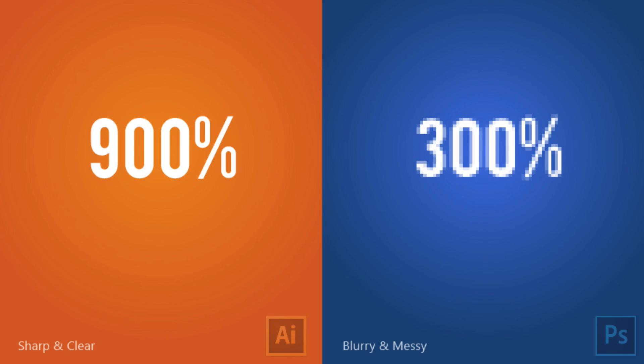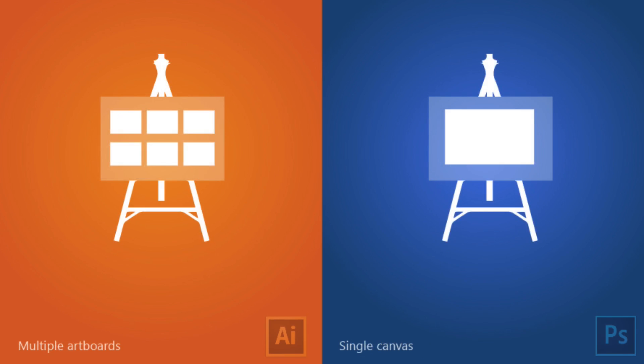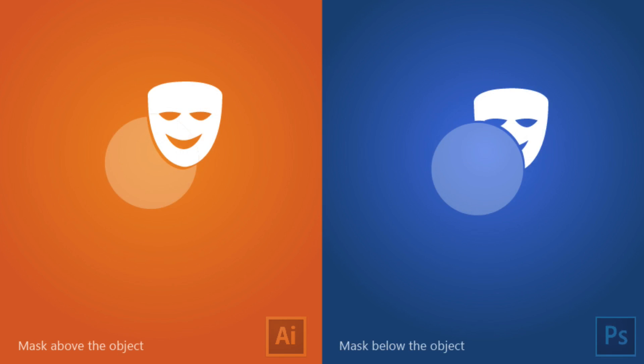A good thing about Illustrator is that it allows you to create multiple artboards, giving you much more space to work with. Artboards are just the workspace you're working in. In Photoshop you can only use a single canvas, and if you want multiple canvases you have to create a new document, whereas in Illustrator you don't have to do that.